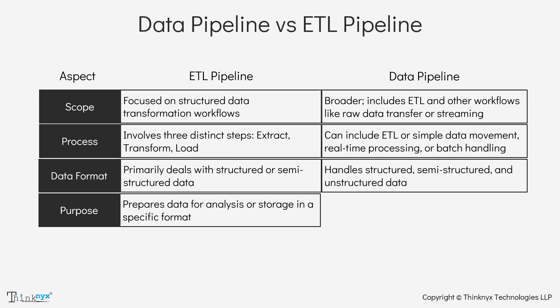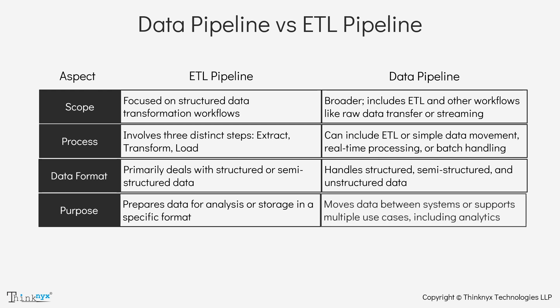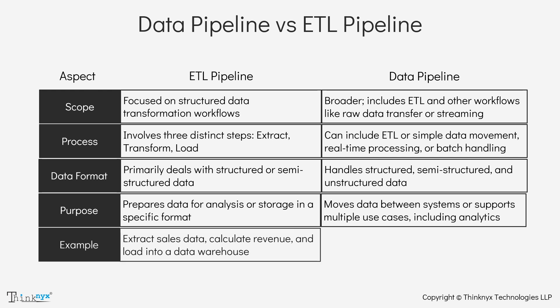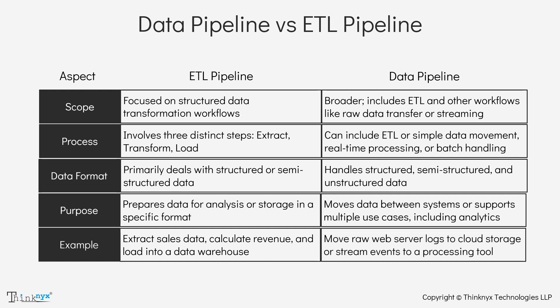For a data pipeline, the purpose is more flexible, like transferring data between systems or supporting real-time applications. For example, an ETL pipeline might extract sales data, transform it to calculate daily revenue, and load it into a data warehouse, while a data pipeline could move raw web server logs to cloud storage or stream events to a processing tool.